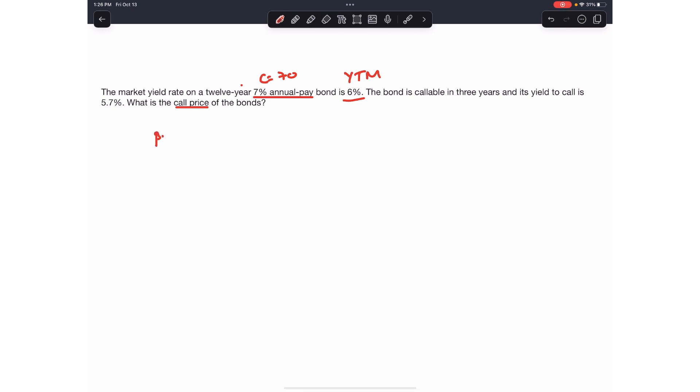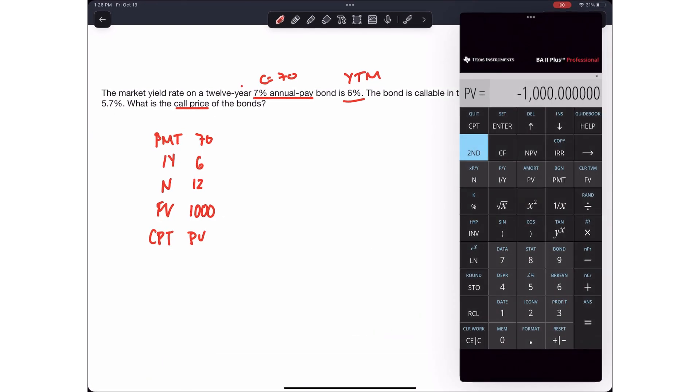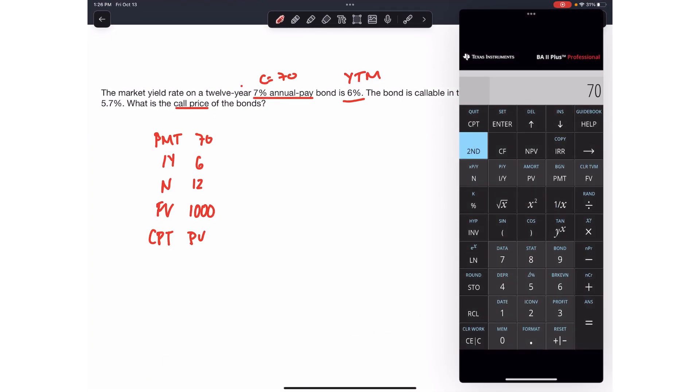So the payment is 70. The interest rate, the IY, is 6. N is 12 because there are 12 years left. Future value, $1,000. Compute the present value. So if we do this on the financial calculator, we get $1,083.84.